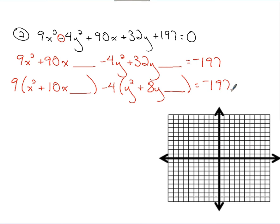So completing the square. For the x's, take half of 10, 5. Square that. I'm adding 25. We saw this with ellipses, right? I'm not really adding 25 here. I'm adding 9 times 25. So I'm adding 225 to both sides.